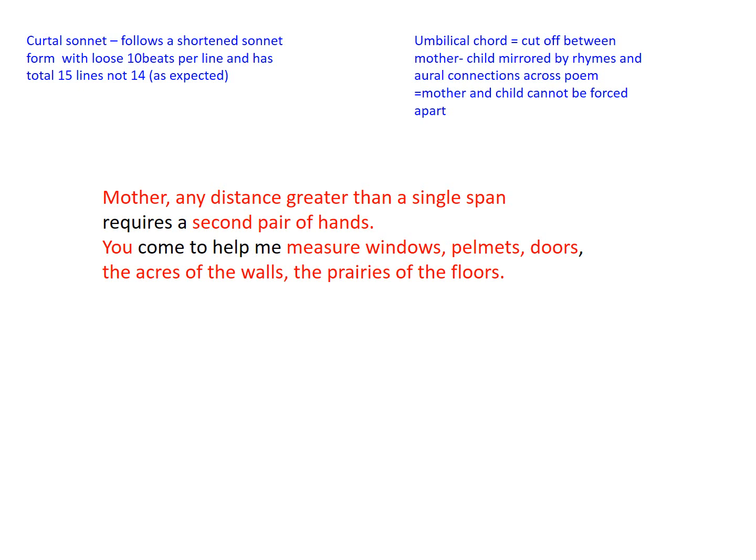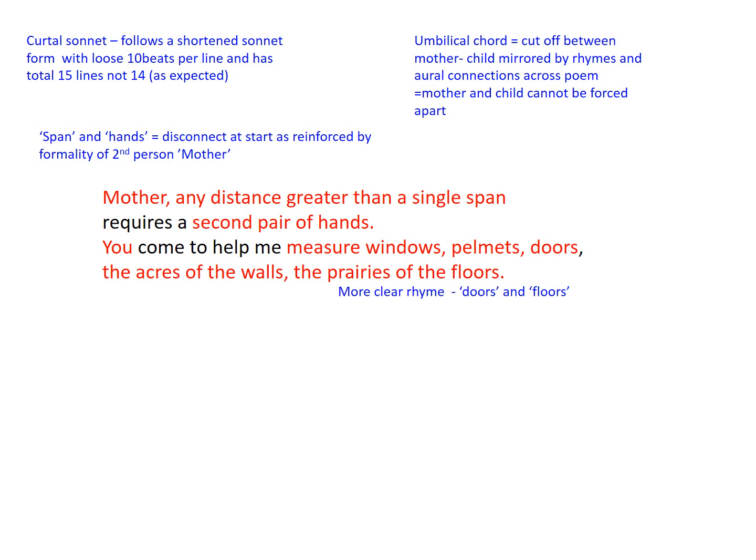Take for example the distance in the enjambement between lines one and two — they're connected, albeit distant. Even the rhyme between lines one and two of 'span' and 'hands' doesn't feel like a comfortable rhyme. In fact, there's a disconnect at the start, reinforced by the opening word being very formal in the second person: 'Mother.' Yet there's a clearer rhyme towards lines three and four with 'doors' and 'floors' — as if this isn't a perfect rhyme, but then their relationship isn't perfect either.